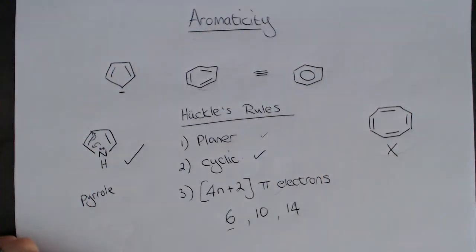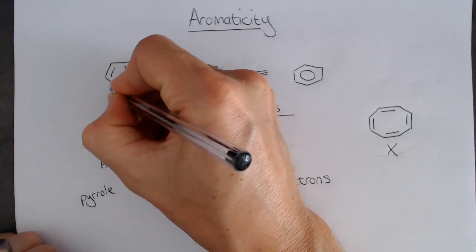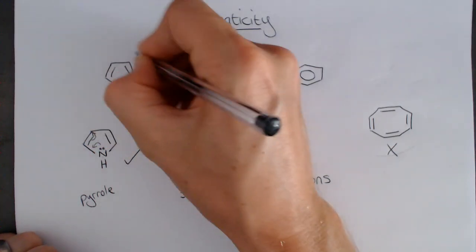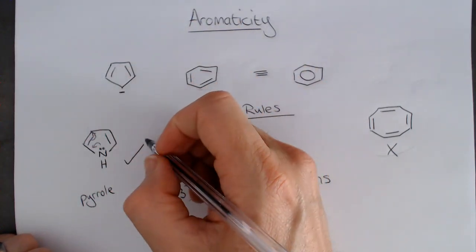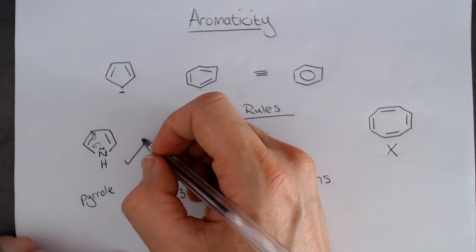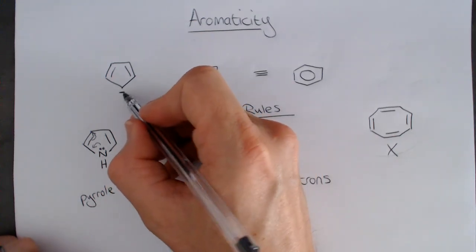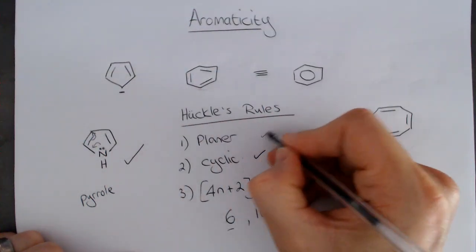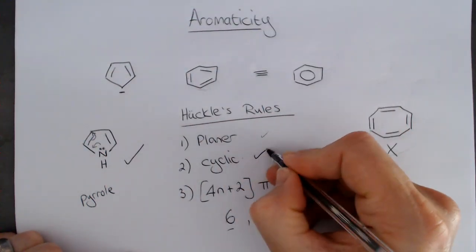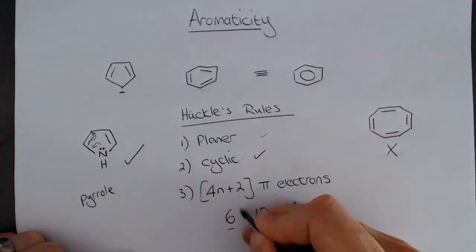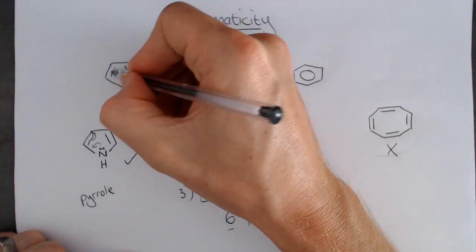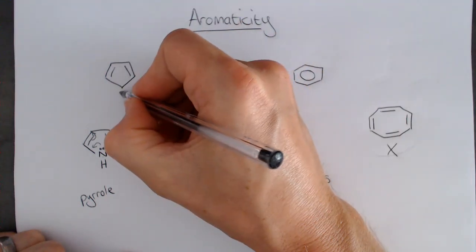And that negative charge can delocalize, and so it can be spread over the entire molecule. But what's more important, why it's even more than just a resonance stabilization, is that this molecule is both planar, it is also cyclic, and it also has six pi electrons. One, two, three, four, five, six from this negative charge.